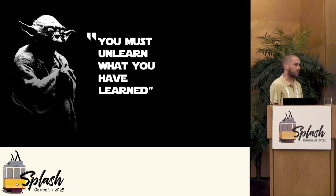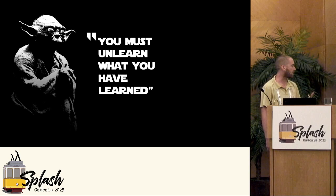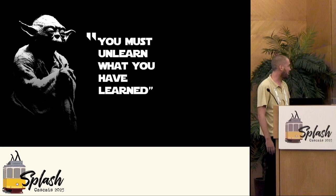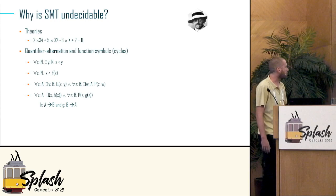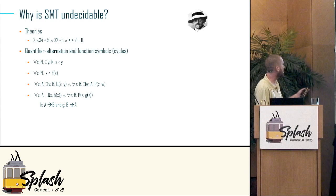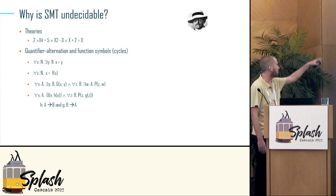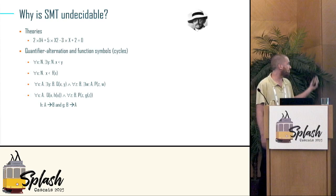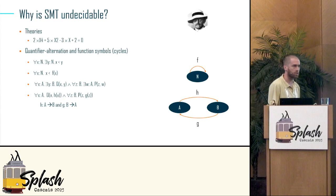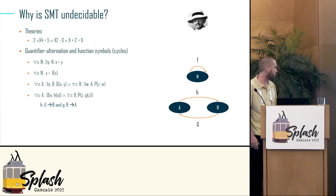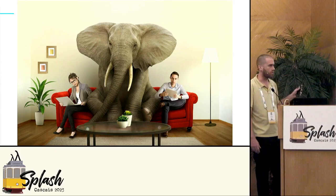Here's a confession: I really like decidable logic. The problem with undecidable fragments is that you get quantifier alternation — this nasty 'for all, exists' pattern. They come from functions when you're building your logic. Once a cycle comes out, the solver can make an infinite number of instantiations and it diverges. This quantifier alternation is our elephant in the room.